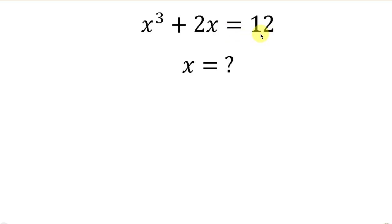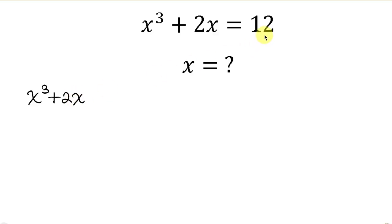Our first step will be to move 12 to the left-hand side. So we have x cubed plus 2x, and as 12 crosses to the left it becomes minus 12, and this is equal to 0.